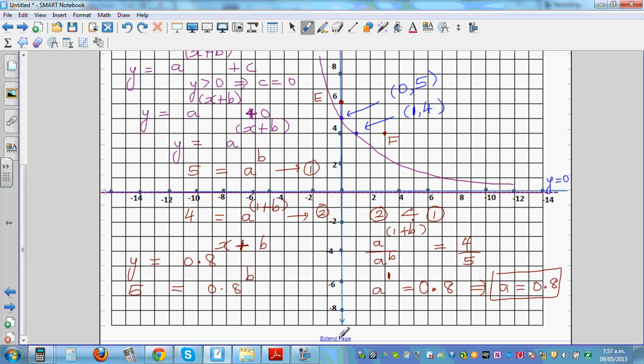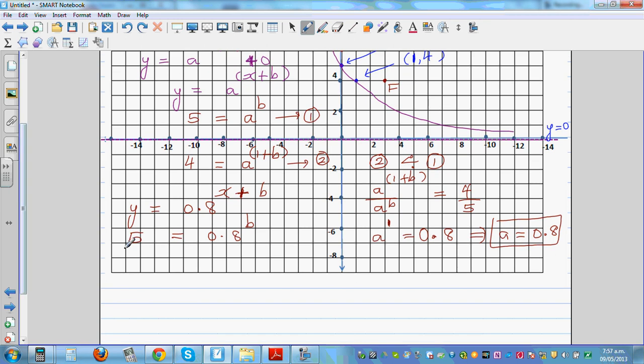Here is where you have to use the log. Taking log of both sides, I can say log of 5 equals log of 0.8 raised to b. Now using the log rule, I can say this is b log 0.8. And now dividing both sides by log 0.8, I can say b.